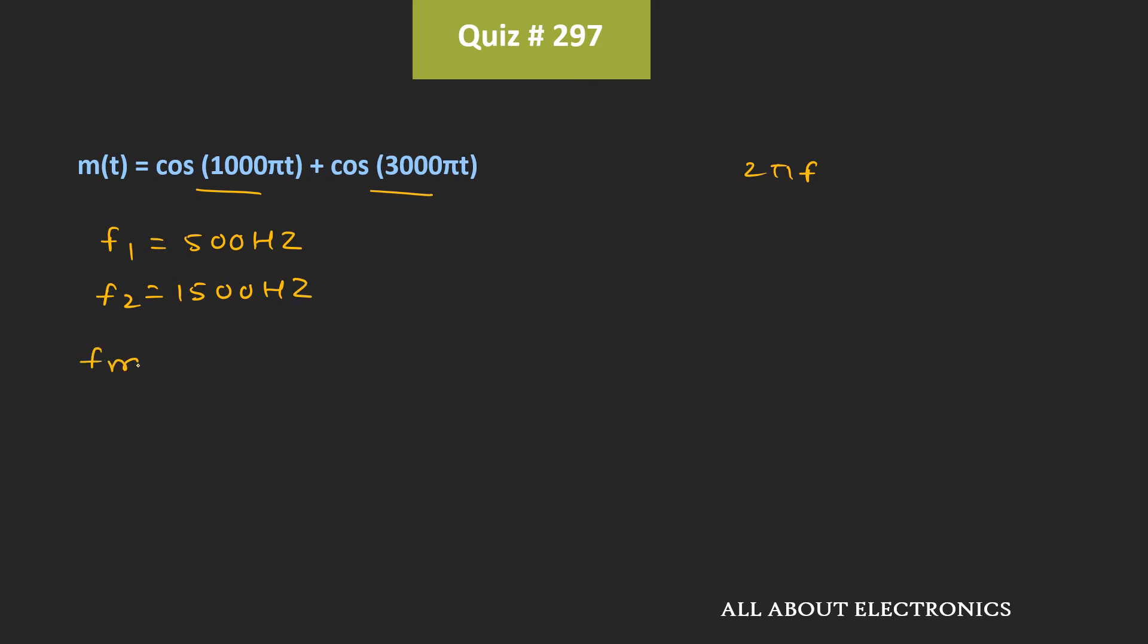That means the maximum frequency in this message signal is equal to 1500 Hz. While the carrier frequency fc is equal to 2 MHz.